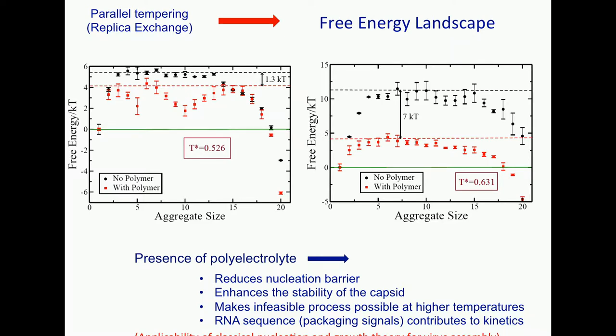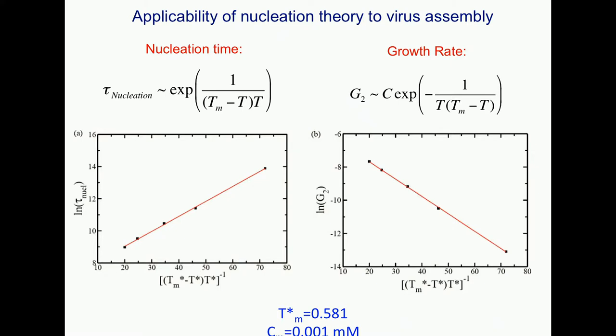This analysis tells us that we could use the classical nucleation growth theory for understanding this assembly of these viruses. The time for nucleation will go like this, and on, similarly, the growth rate is predicted to be that way, and that's exactly what we saw. Whether we look at the nucleation rate or the growth rate, the melting temperature or crystallization temperature is the same, and it has to be. This verifies theoretically that nucleation growth mechanism is operating for the growth kinetics of viruses.